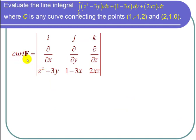So we take the curl of f, which is the determinant of the matrix i, j, k, del over del x, del over del y, del over del z, z squared minus 3y, 1 minus 3x, and 2xz. So I take the determinant.